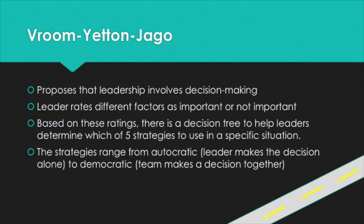How are you supposed to remember all this? You can remember the Vroom Yetton Jago Model is all about decision trees by thinking about the word 'Vroom', like a car that gets to a fork in the road and has to make a decision — you decide which way to go, or what leadership style to use.